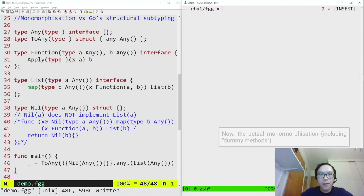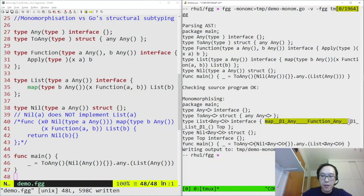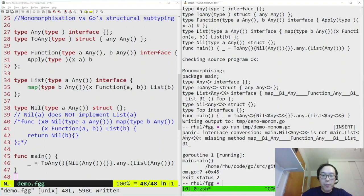To deal with this, we introduce what we call dummy methods into the monomorphization. A dummy method represents a generic method, even if it's not used, and so has no instances. If we look at the actual monomorphization by removing this bogus no dummy flag, you can see that list has a dummy version of the map method. The implementation just uses name mangling, and if we run this now, we get the correct behavior, which is a panic because the type assertion fails, because nil doesn't implement the map method.